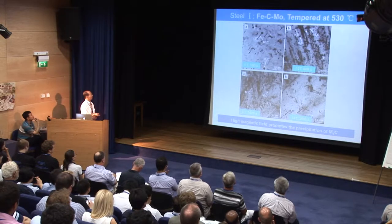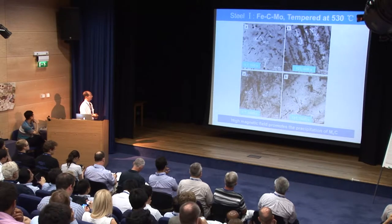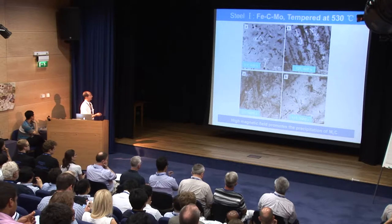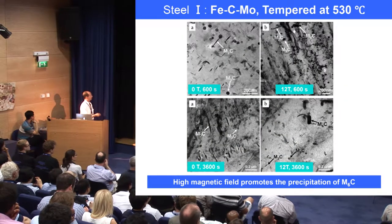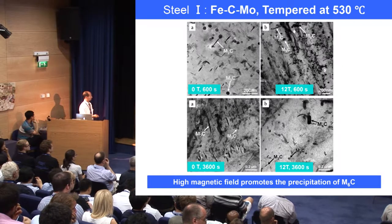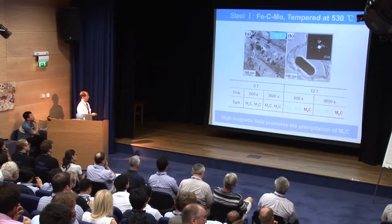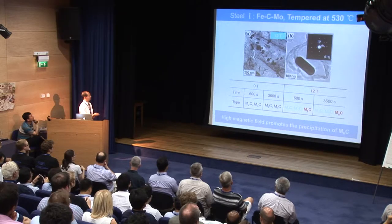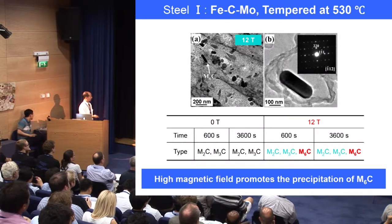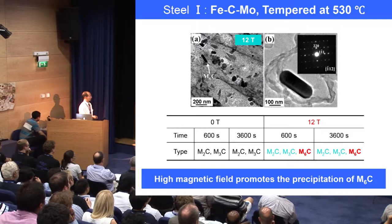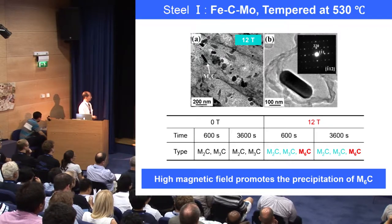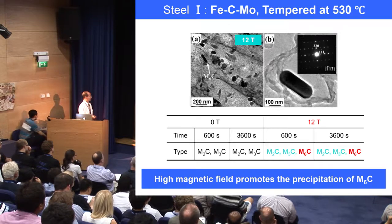When we transfer the temperature to an intermediate temperature, we also find that M6C is precipitated at both long and short holding times. These two TEM images further prove that the M6C is precipitated in the presence of high magnetic field. This also shows that M6C carbide is precipitated in the presence of high magnetic field, but with conventional heat treatment we only see M2C and M3C precipitated in the specimen. So it is found that M6C is promoted by the high magnetic field.